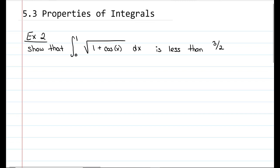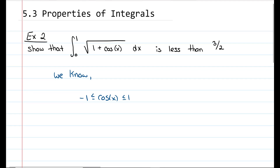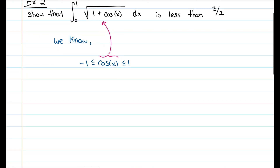Let's start with what we know. We know that cosine of x is between negative 1 and 1 — the outputs of cosine of x are between negative 1 and 1. Just like in the squeeze theorem, we're trying to make the inside piece match exactly. So we add 1 to everything, giving us 0 is less than or equal to 1 plus cosine of x, which is less than or equal to 2.